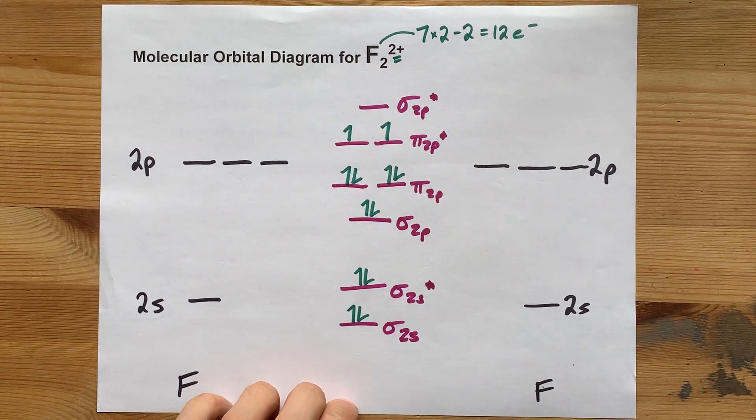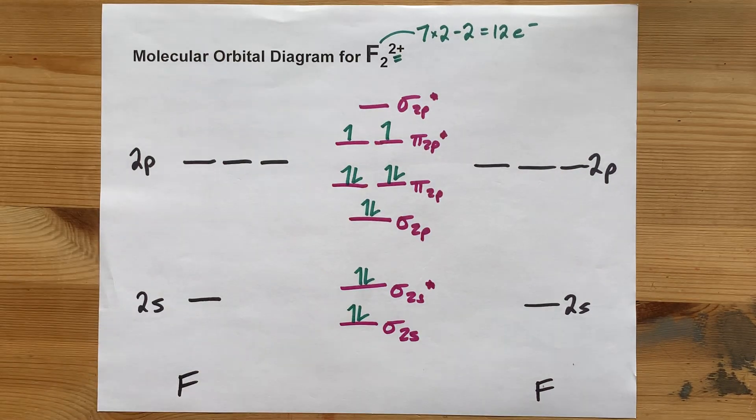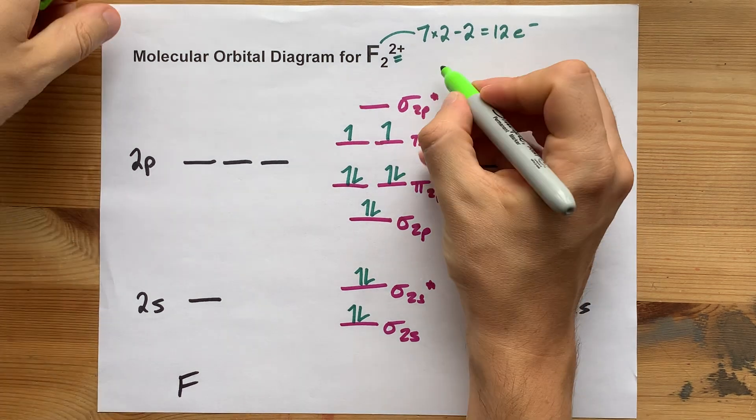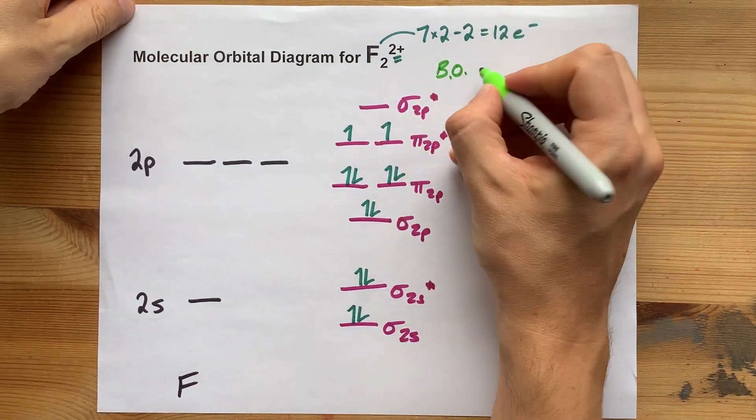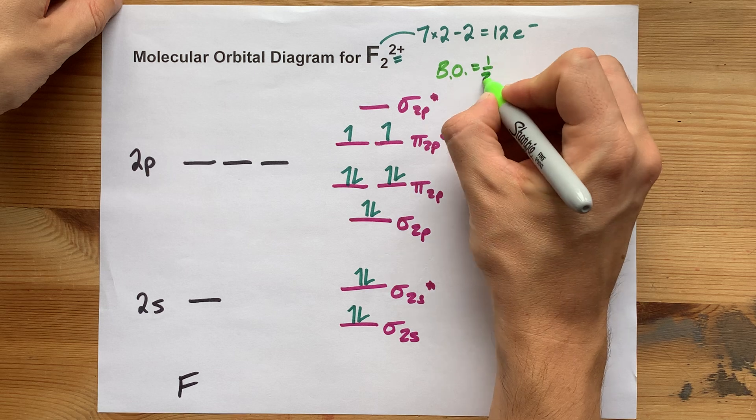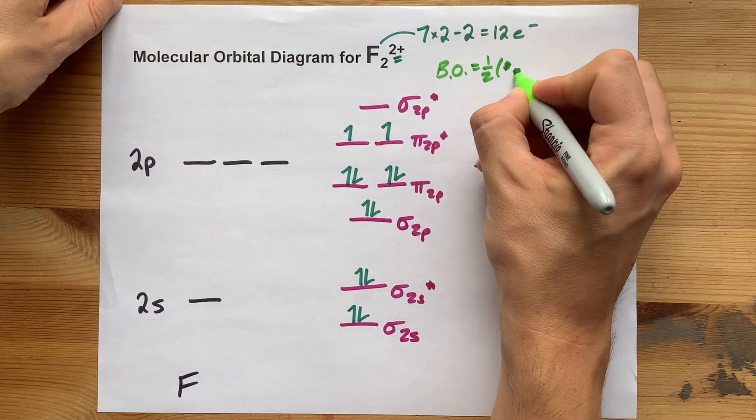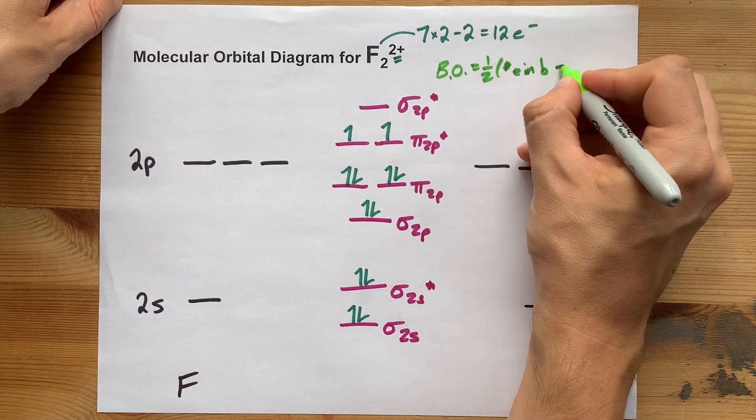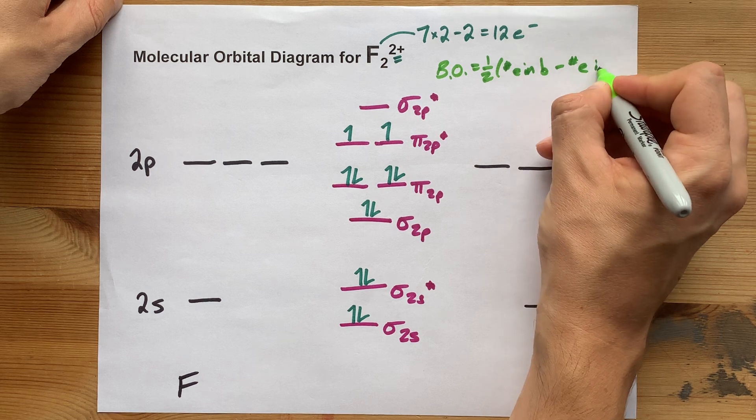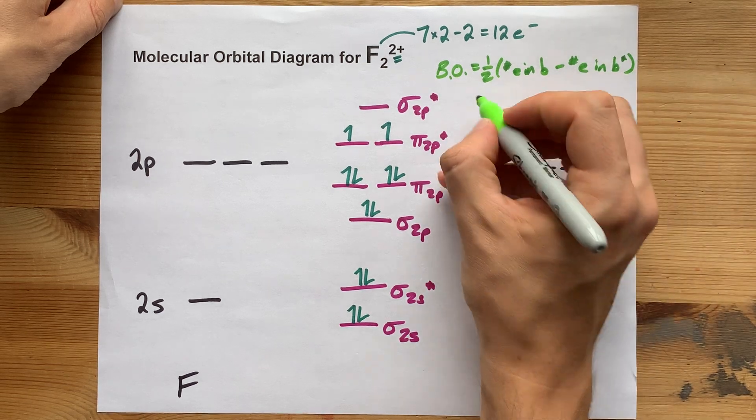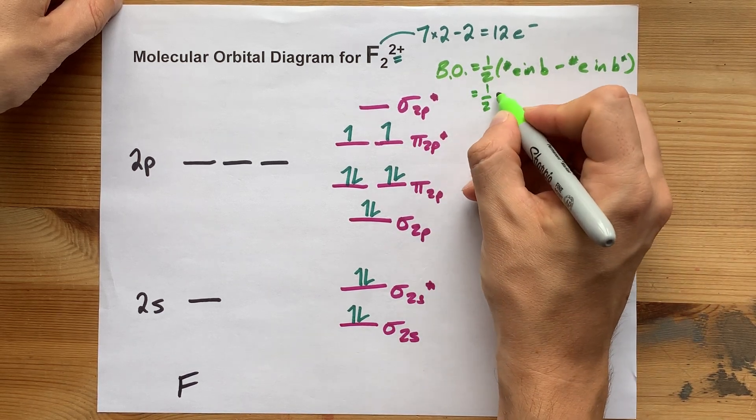This is your molecular orbital diagram for F2 2+. As a bonus, your teacher might ask you for the bond order of this. Your job is to find the number of electrons in bonding orbitals, take away the number of electrons in anti-bonding orbitals, then cut that in half.